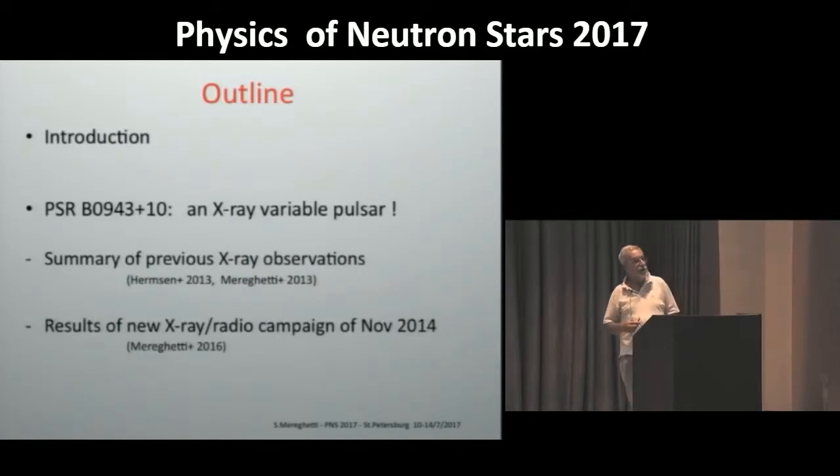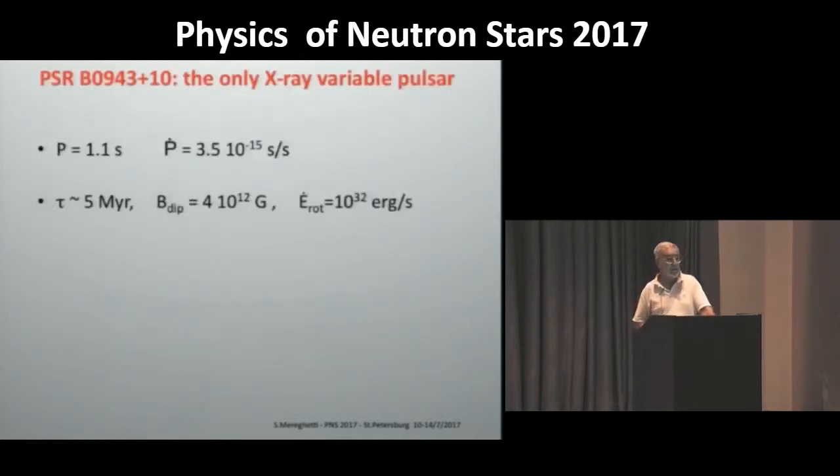So this was my introduction. And now in the following, I will concentrate on this rotation power pulsar, which is the first, or possibly one of the few X-ray-variable pulsars. First, I will make a summary of previous results. And then I will concentrate on the results of the new campaign on this object that we had in 2014. So this is an ordinary pulsar. It has timing parameters that place it in the bulk of the normal pulsars. It has a typical dipolar field of a few tenths to the twelfth Gauss and a characteristic age of five million years.